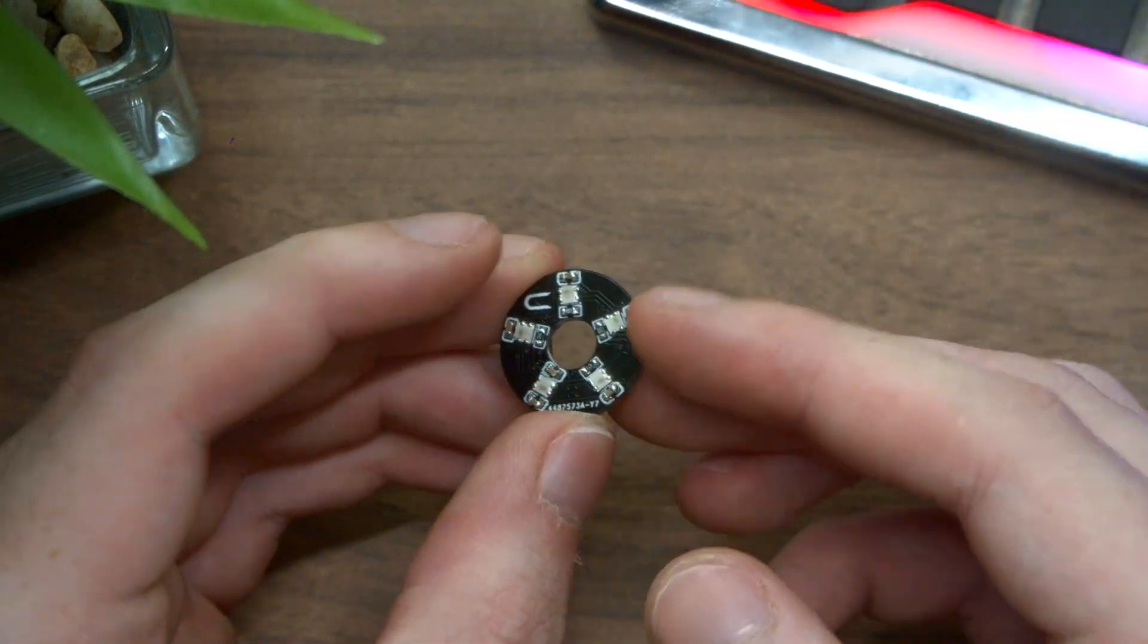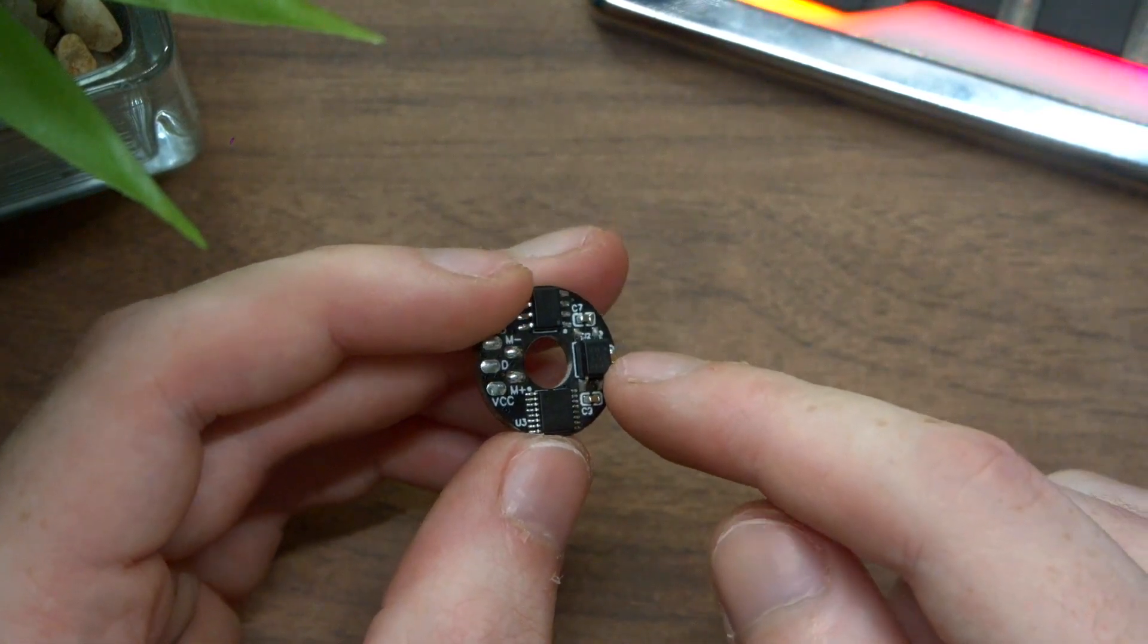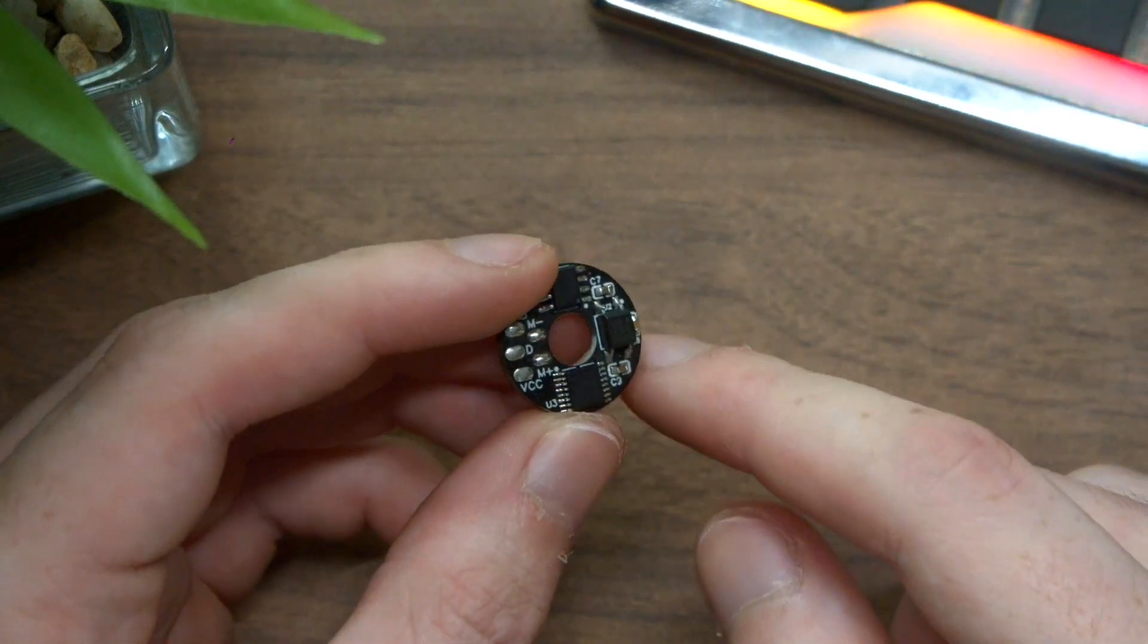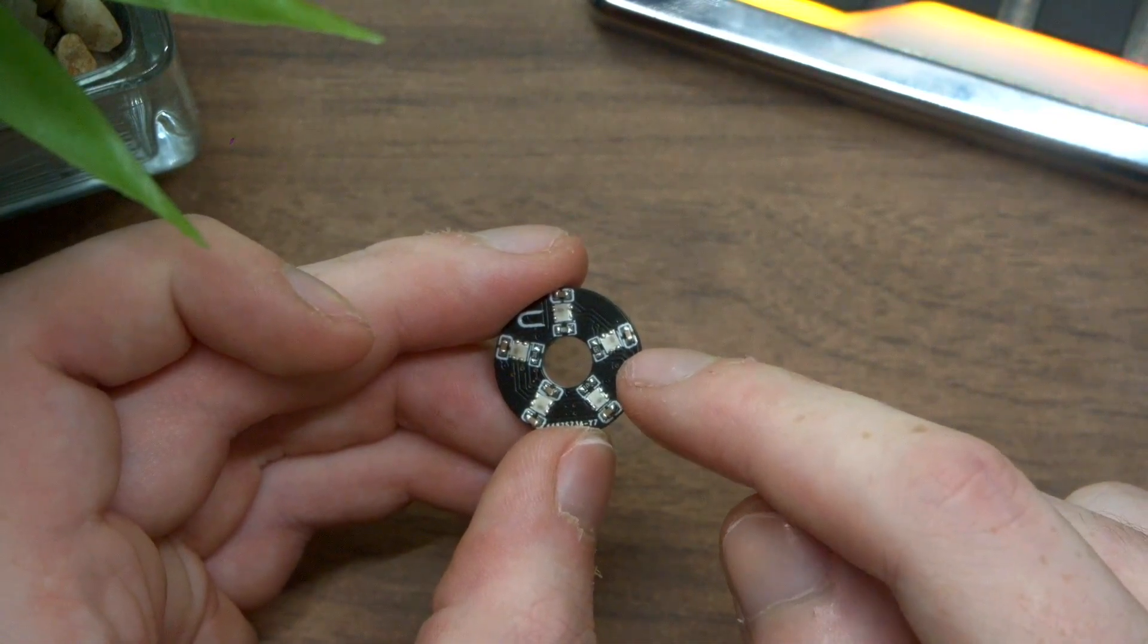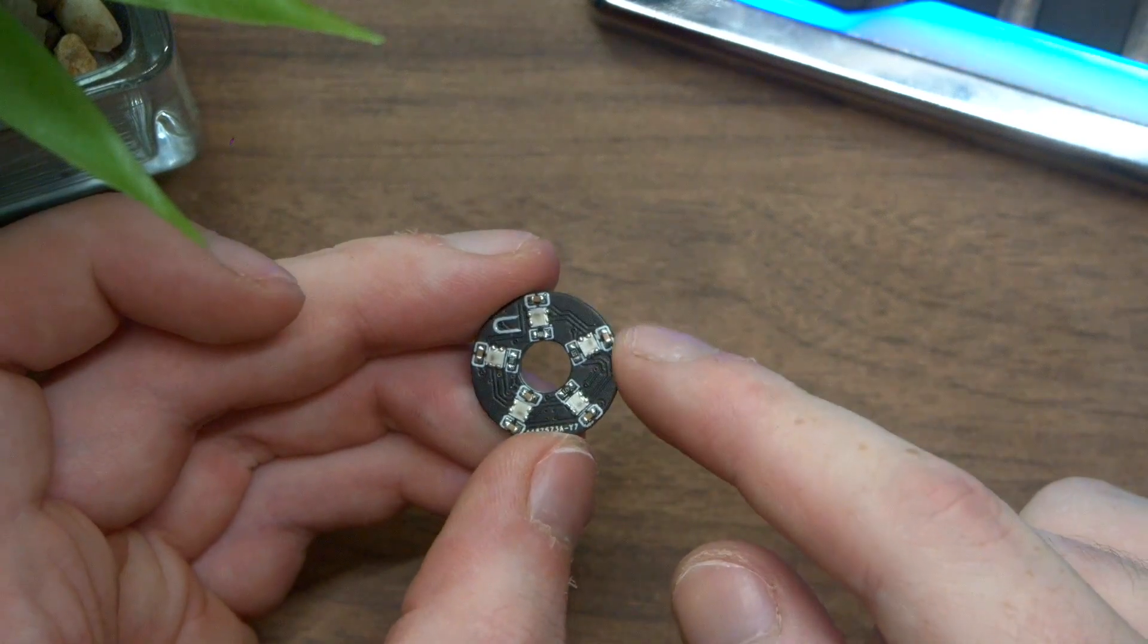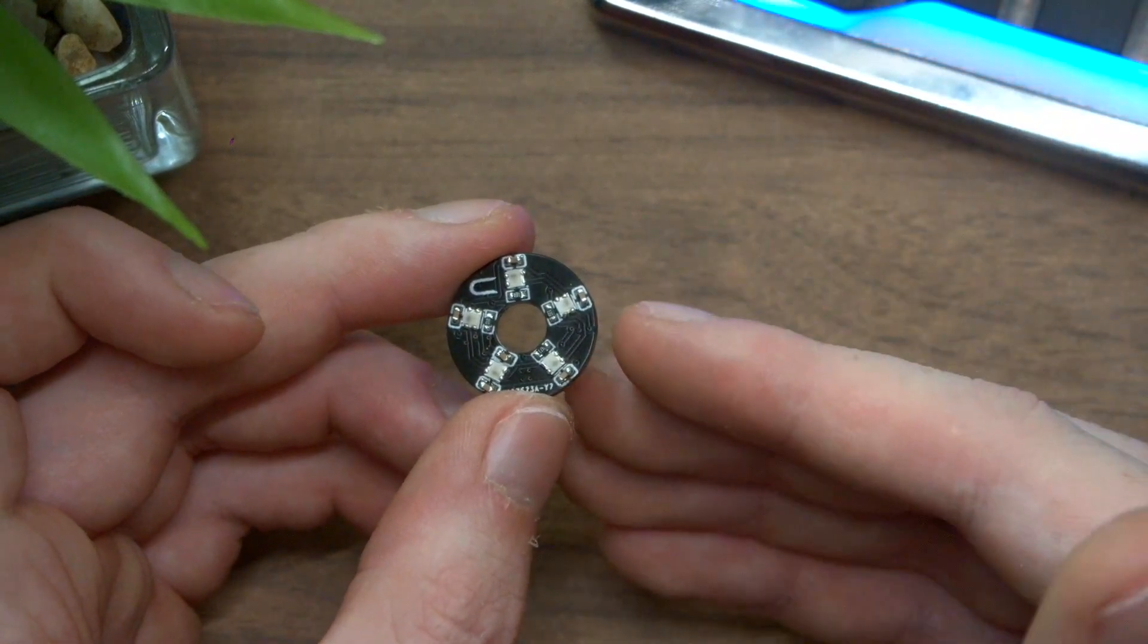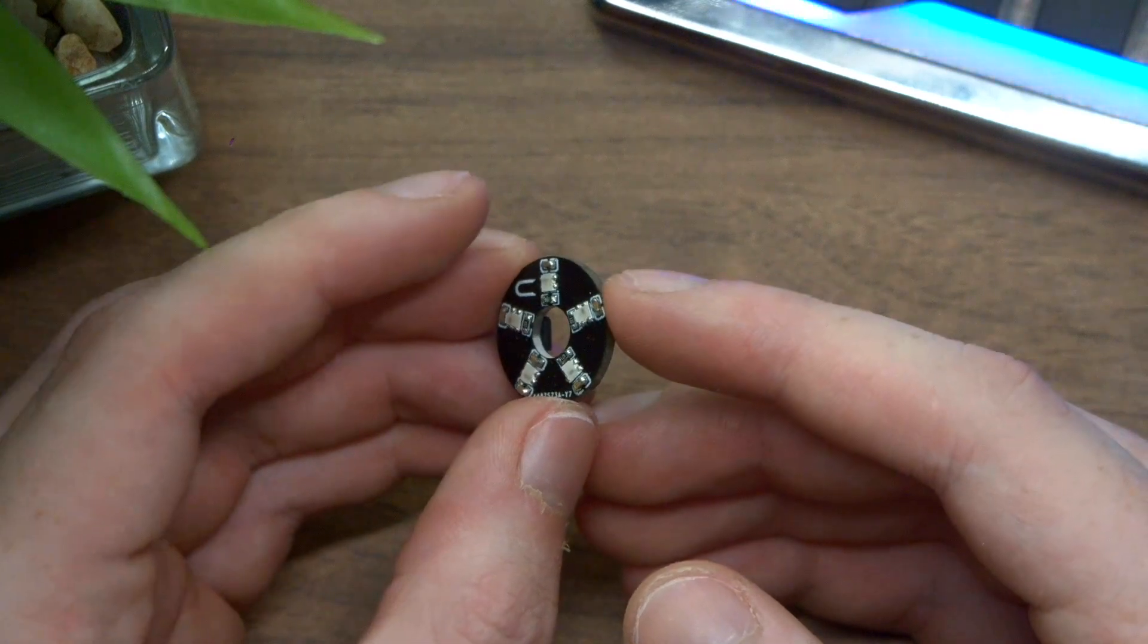But if you don't choose to ID it, then worst case scenario the first pixel will look a bit strange. So say you sub-blade the first pixel so that the motor responds differently. If you then take the plug out and swap it for a blade, the first pixel on that blade will probably look a little bit weird. But you know, if that's kind of buried deep in the saber, there's kind of nothing really to worry about there.